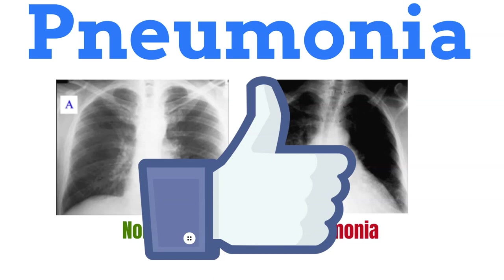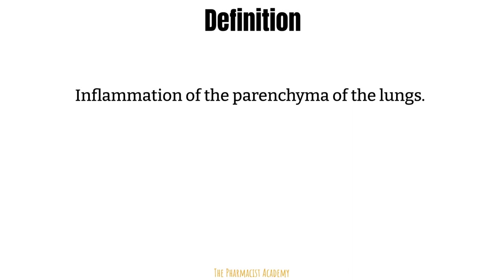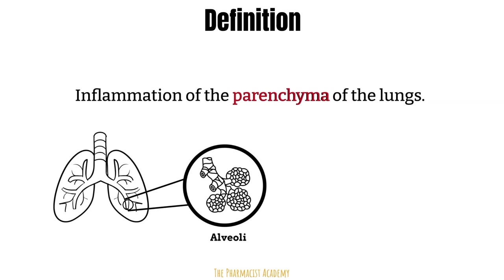Although we normally think of a lung infection, by definition, pneumonia is the inflammation of the parenchyma of the lungs. This inflammation is more often but not always caused by infections. The parenchyma is a type of tissue that consists of cells that carry out an essential function. Most of the parenchyma found in the lungs is in the alveoli. In this video, we'll focus on infectious pneumonia and specifically bacterial pneumonia.